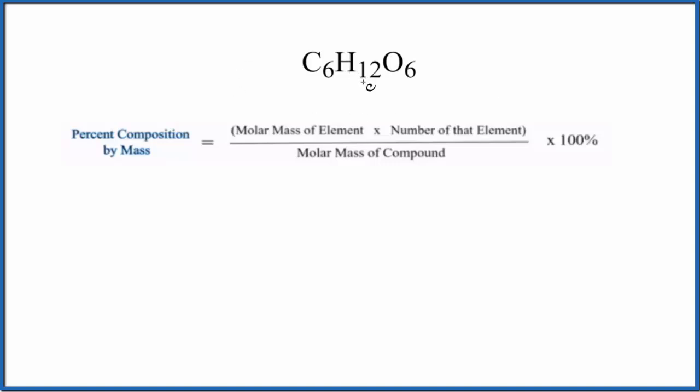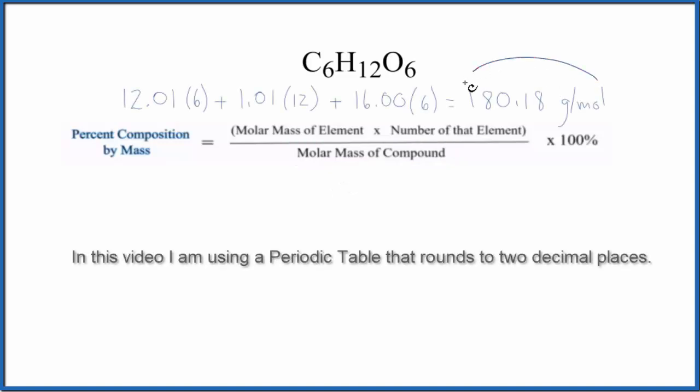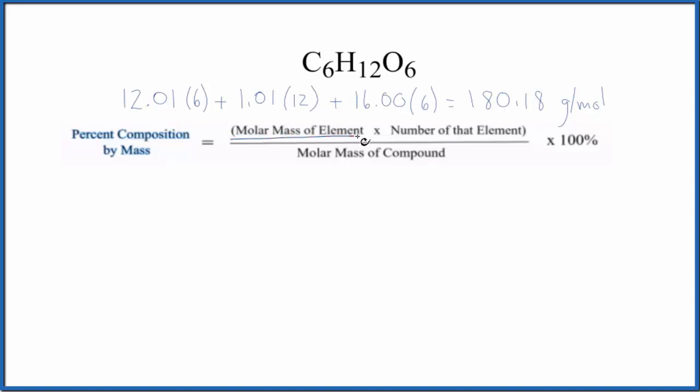So the first thing we need to do is figure out the molar mass for the entire compound. When we do that, we get 180.18 in the units grams per mole. So we know the molar mass for the compound, now we're going to look at the molar mass for the element, we'll multiply that by the number of the element, and then divide by the molar mass for the whole compound. Let's do that for each element here.